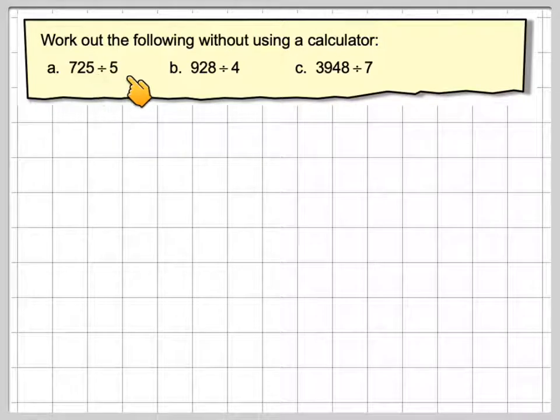We've got 725 divided by 5, 928 divided by 4, and 3948 divided by 7.